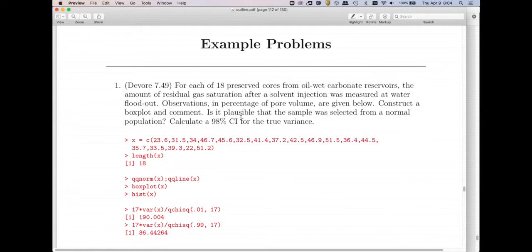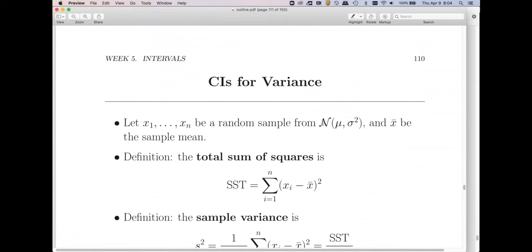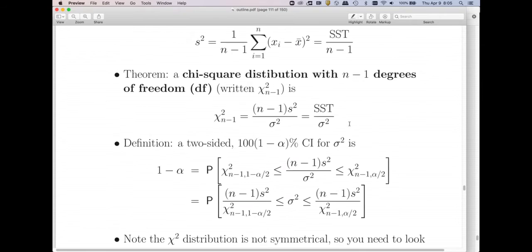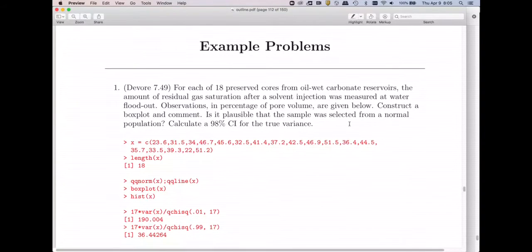And we're asked a couple things. So first off, we should look at the distribution and make sure that it's plausible that it's from a normal population. So in order to use this formula, we need a normal distribution. So we ought to just confirm that that's a plausible assumption before going forward. If it's not normal, we may want to do a transformation on it. But that's not going to be an issue here. Then we're asked to find a 98% confidence interval for the variance.